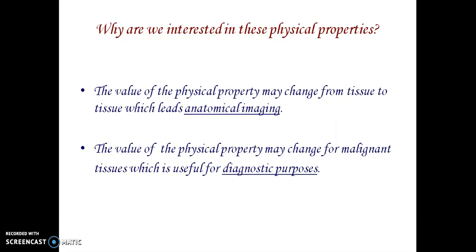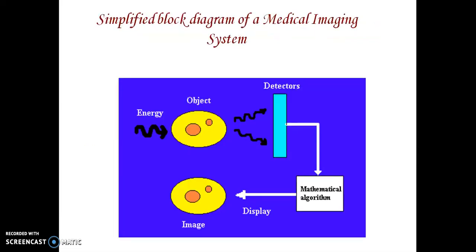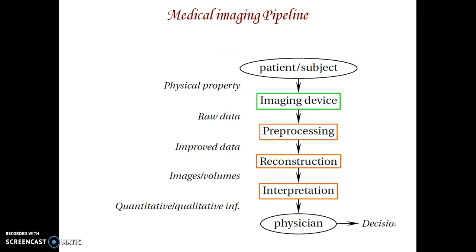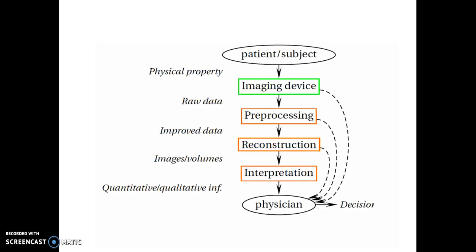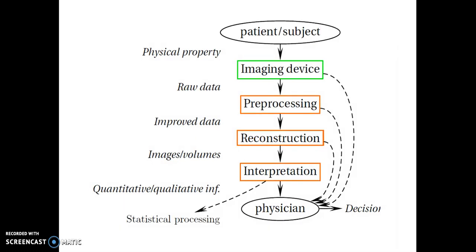Different imaging methods are based on separate physical interactions of energy with biological tissues, providing images of different physical properties. The value of a physical property may change from tissue to tissue, leading to anatomical imaging, or may change for malignant tissues, which is useful for diagnostic purposes. The pipeline involves: acquisition with the patient and imaging device, preprocessing, image reconstruction, interpretation with quantitative and qualitative measures, and decision-making.